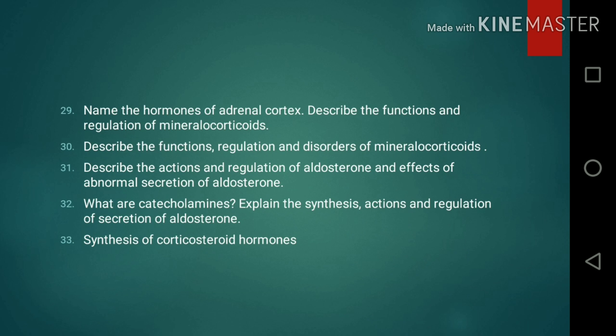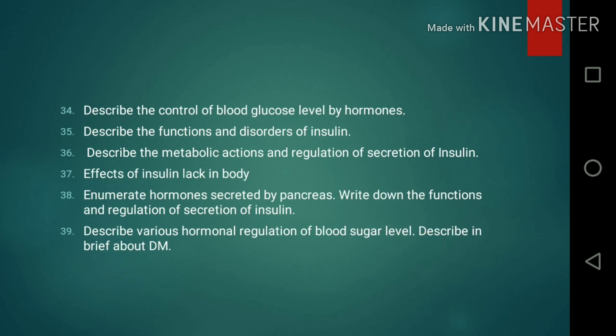Question 29: Name the hormones of the adrenal cortex; describe the functions and regulation of mineralocorticoids. Question 30: Describe the functions, regulation, and disorders of mineralocorticoids. Question 31: Describe the actions and regulation of aldosterone and the effects of abnormal secretion of aldosterone. Question 32: What are catecholamines? Explain the synthesis, actions, and regulation of secretion of aldosterone. Question 33: Synthesis of corticosteroid hormones. Question 34: Describe the control of blood glucose level by hormones.